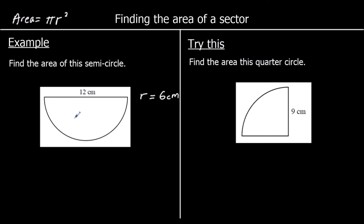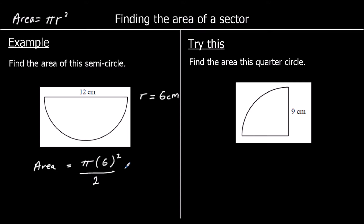To find the area of the whole circle, we would use pi times the radius squared. So the area of the whole circle is pi times 6 squared. But because we've got a semicircle, we've got half of the area, so the area of a semicircle is half of the area of the whole circle, so we're going to divide it by 2. 6 squared is 36. Pi times 36 we can write as 36 pi, which means 36 times pi. And we're going to half it, so half of 36 is 18. So we've got 18 pi.